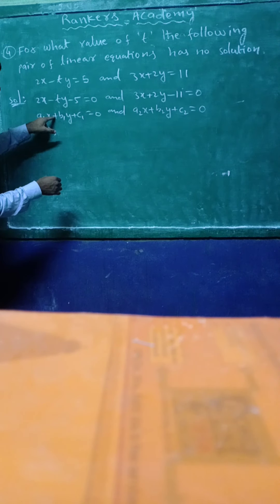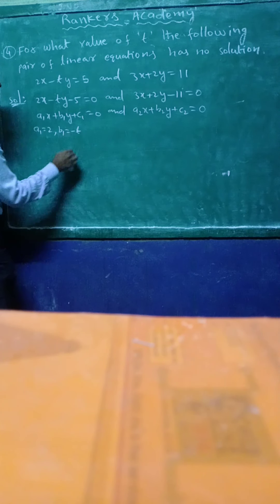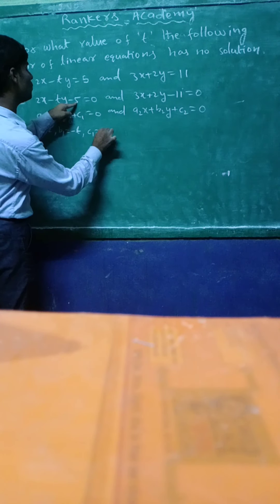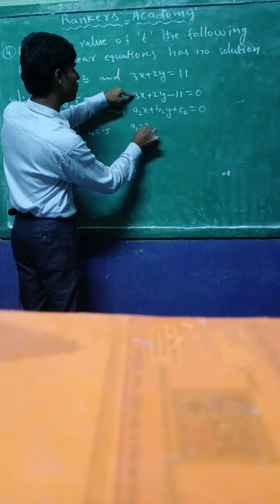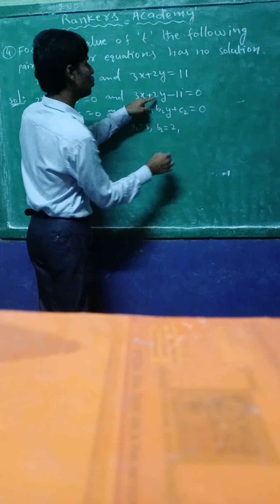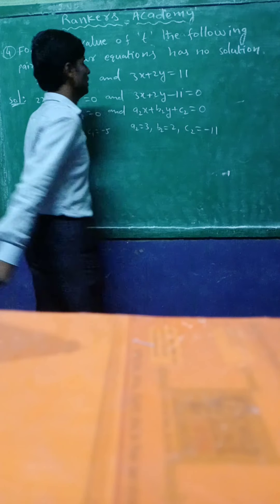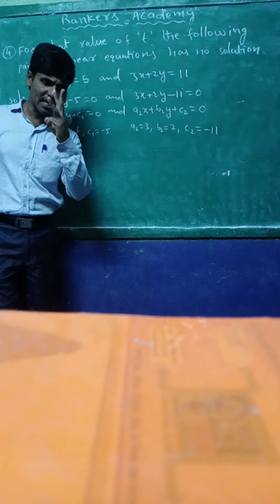b1 equal to minus t, actually. So b1 equal to minus t. c1 equal to minus 1. Here a2 equal to 3, b2 equal to 2, c2 equal to minus 11.